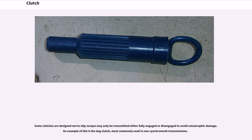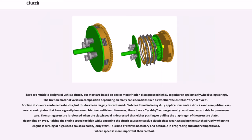Some clutches are designed not to slip — torque may only be transmitted either fully engaged or disengaged to avoid catastrophic damage. An example is the dog clutch, most commonly used in non-synchromesh transmissions. Most vehicle clutches are based on one or more friction discs pressed tightly together or against a flywheel using springs. The friction material varies depending on whether the clutch is dry or wet. Friction discs once contained asbestos, but this has been largely discontinued. Clutches found in heavy-duty applications such as trucks and competition cars use ceramic plates with a greatly increased friction coefficient.